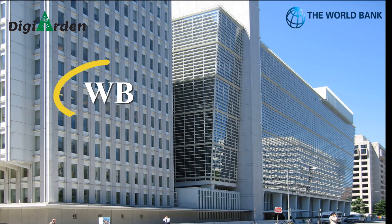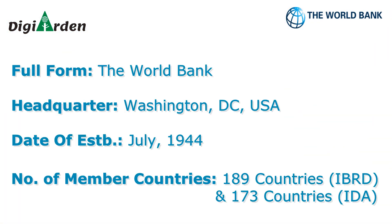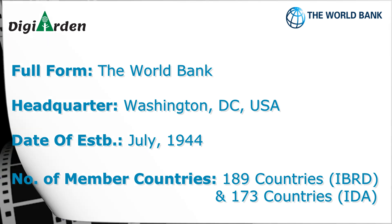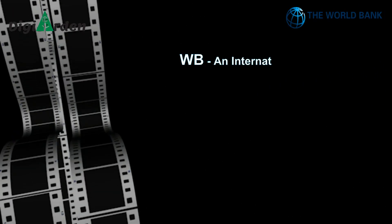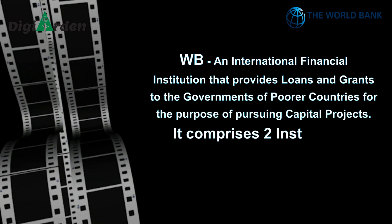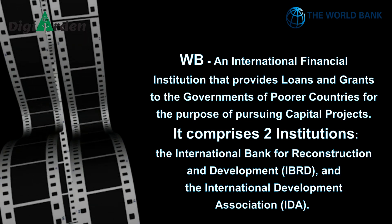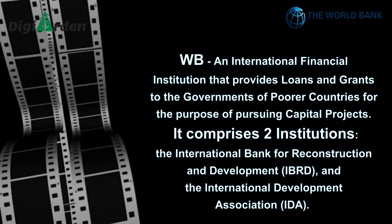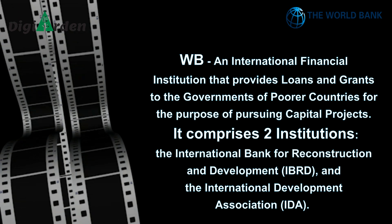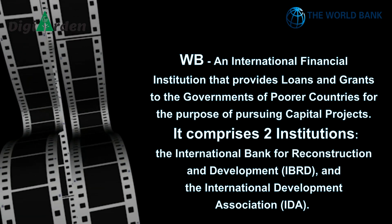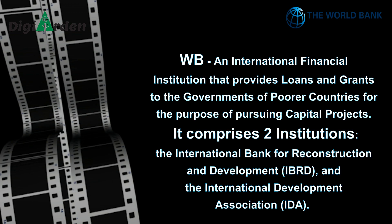Seventh one is WB, better known as World Bank. Headquarter in Washington, D.C., U.S. Established in July 1944. Number of member countries: 189 countries under IBRD and 173 countries under IDA. World Bank is an international financial institution that provides loans and grants to the governments of poorer countries for the purpose of pursuing capital projects. It comprises two institutions: the International Bank for Reconstruction and Development (IBRD) and the International Development Association (IDA).